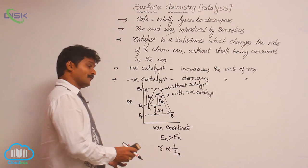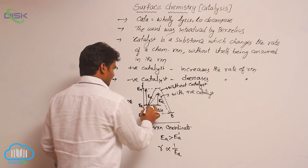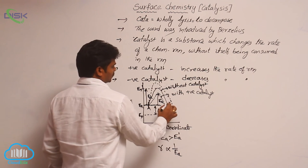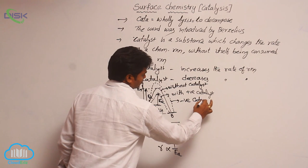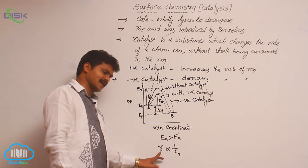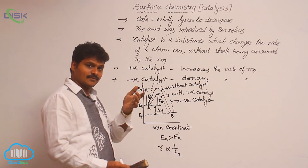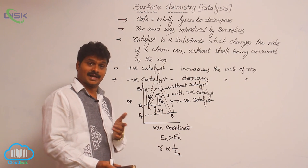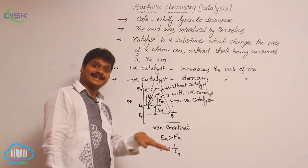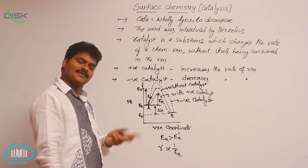If a negative catalyst is added, the reaction follows a path with further increased activation energy, so the rate of reaction further decreases. When a positive catalyst is added, rate of reaction increases due to decrease in activation energy; when a negative catalyst is added, rate of reaction decreases due to increase in activation energy.